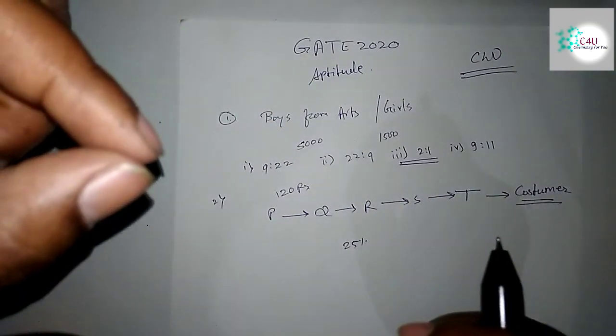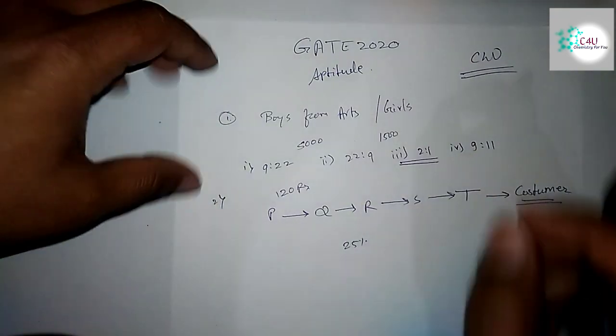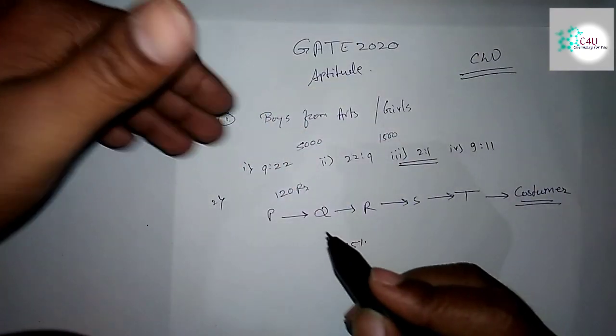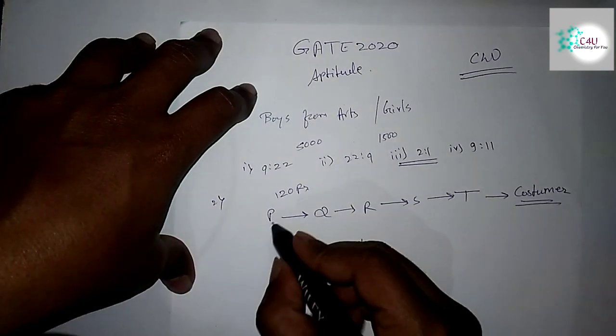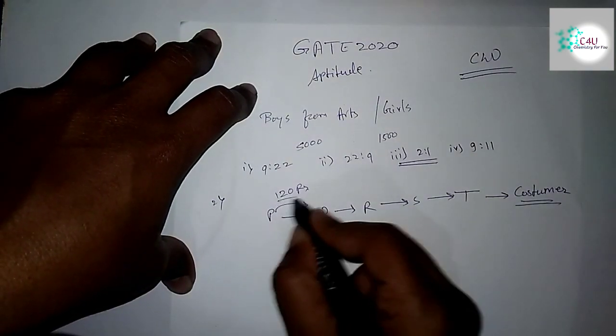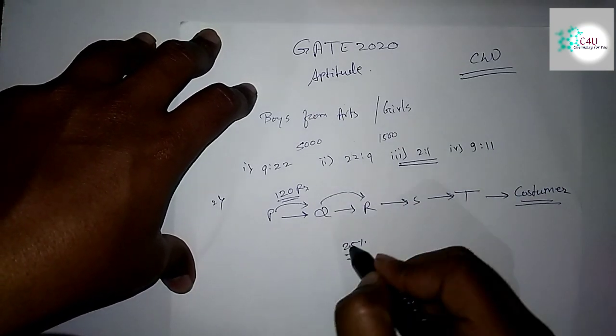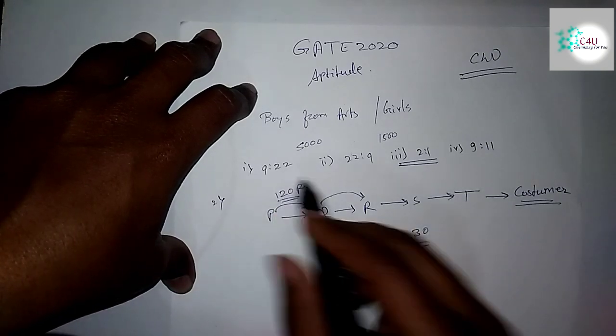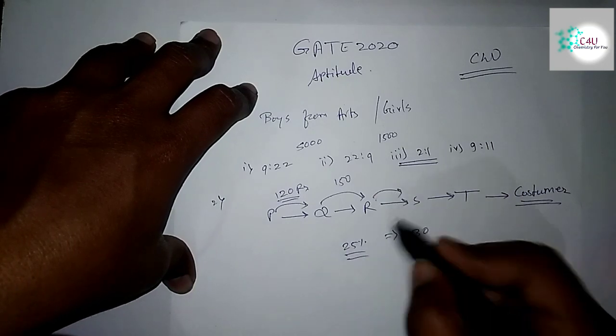At each step the price was increasing 25%. In the first step P to Q, the price is 120 rupees. Q to R, the increase is 25% of 120, which is 30 rupees, so 120 plus 30 equals 150. From R to S, 25% of 150 becomes 37.5, so the price becomes 187.5 rupees.